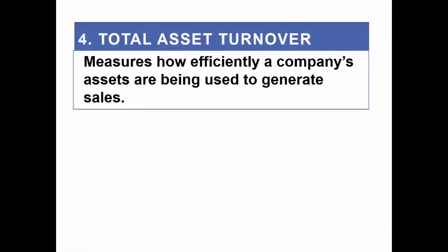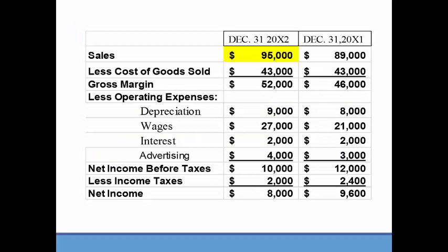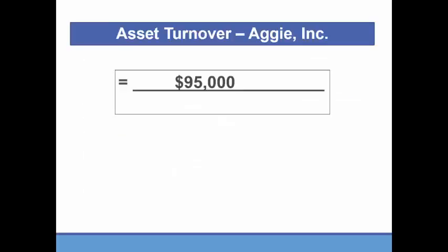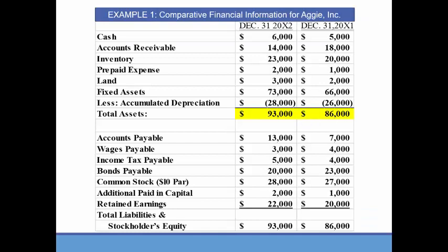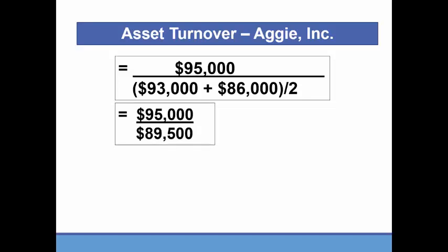Now we'll look at asset turnover, which examines how management used assets to generate sales. The formula is sales over average total assets. We take sales of $95,000 from the income statement, then from the balance sheet total assets ended at $93,000 and began at $86,000. So $93,000 plus $86,000 divided by 2 gives average total assets of $89,500. That gives us $95,000 divided by $89,500, or 1.06 times.